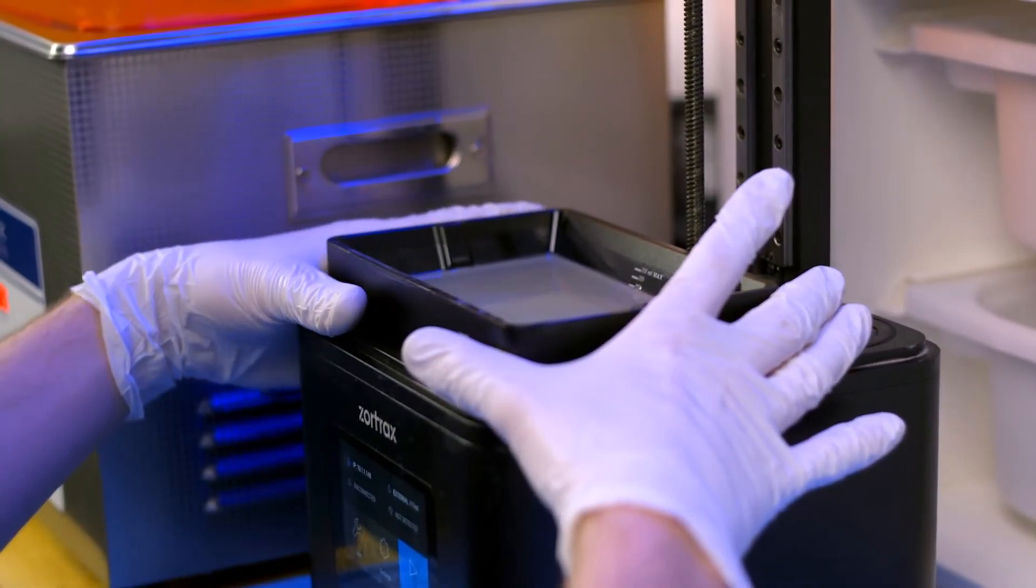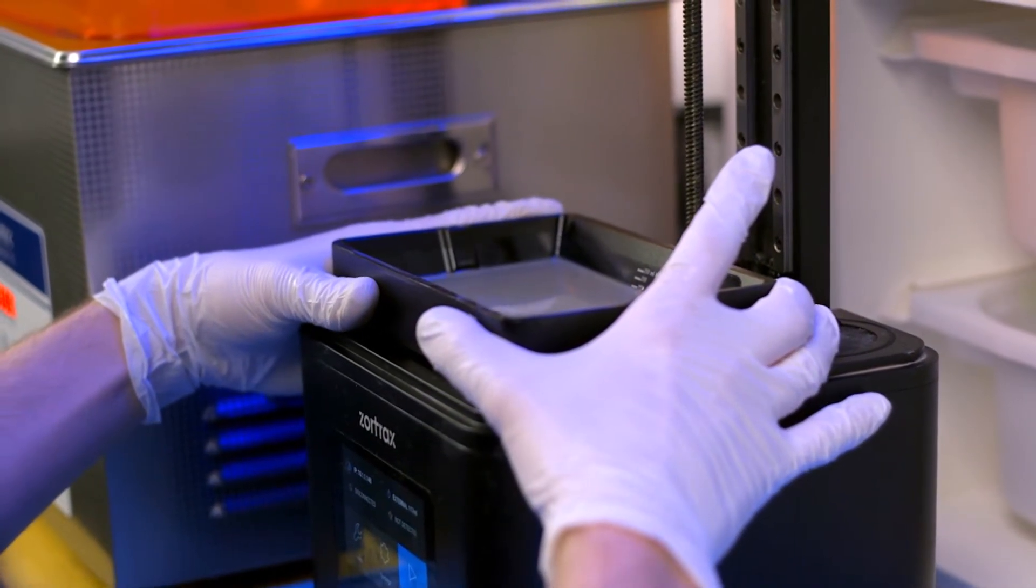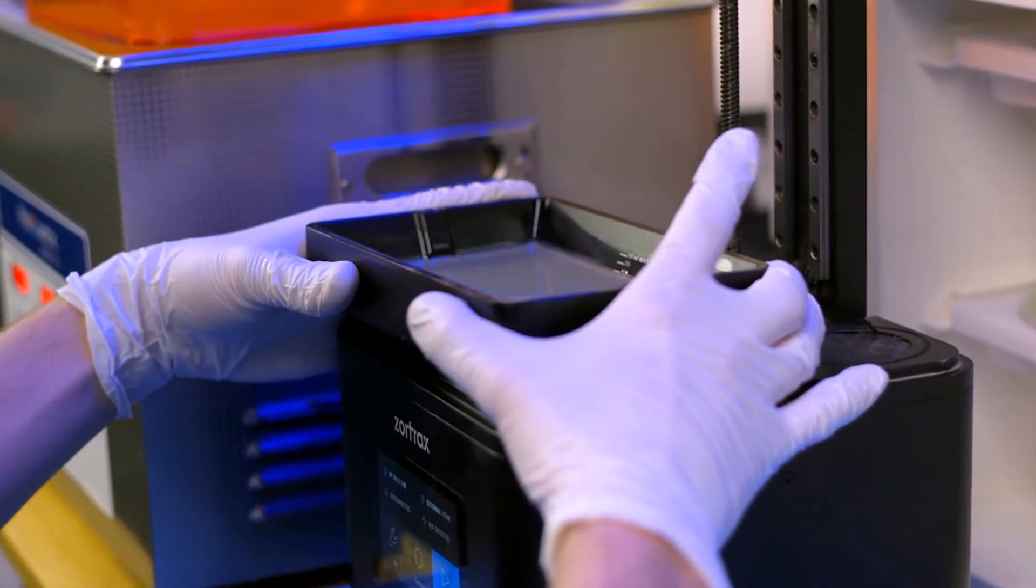Step 8: Carefully remove the vat from the resin printer. If possible, keep room lights low to prevent any curing of the resin. Set on the protected surface.